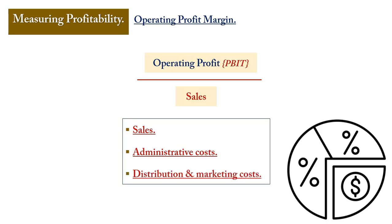You can also have higher distribution and marketing costs — for example, if the business embarked on a stronger marketing campaign absent in the previous year, operating costs go up and operating profit comes down. The reverse can also be true: sales could be higher than the previous year, and factors such as better-managed administrative costs or removal of irrelevant items could lead to a higher operating profit.